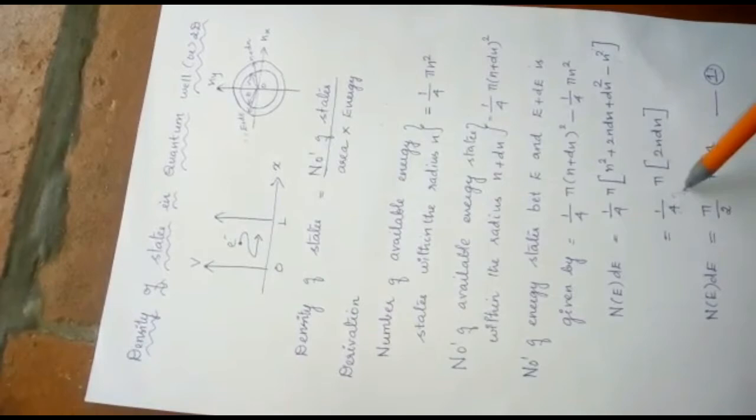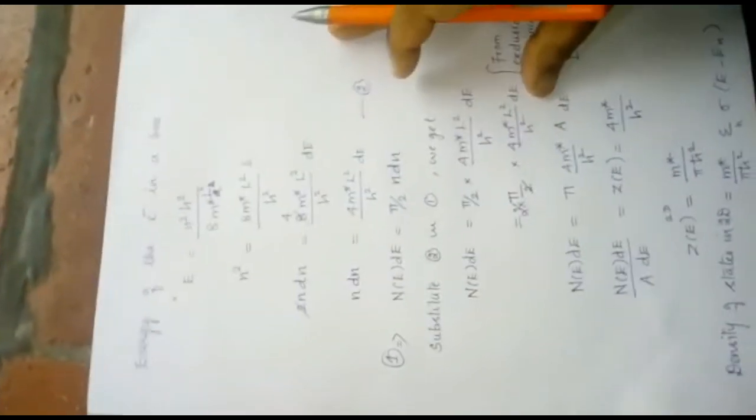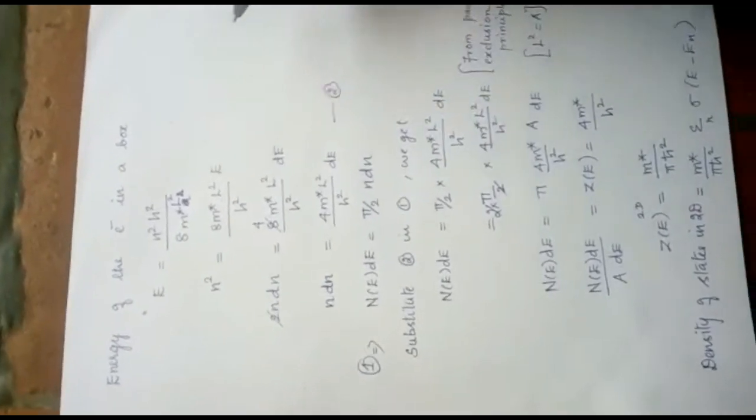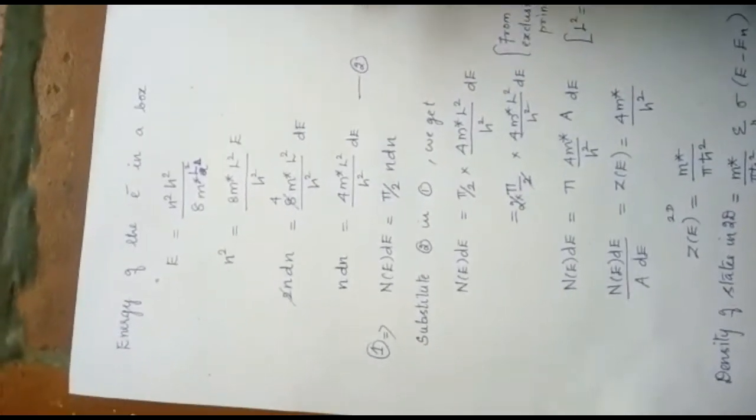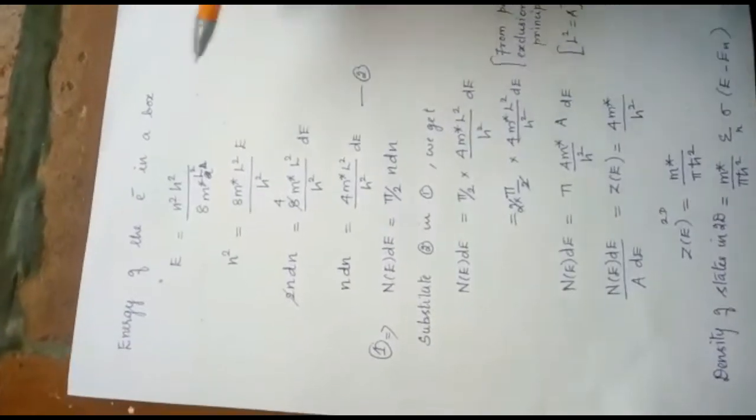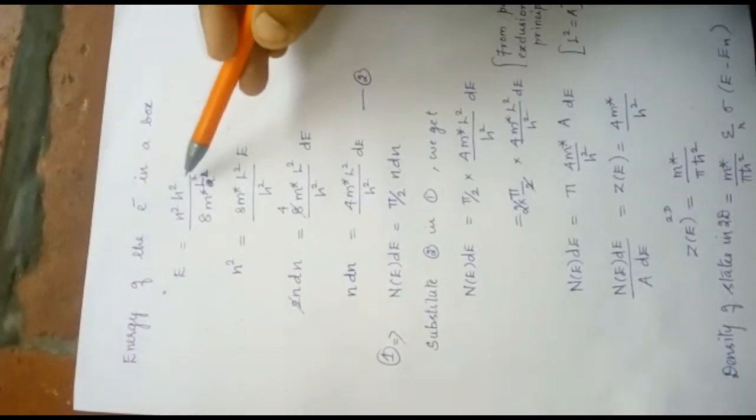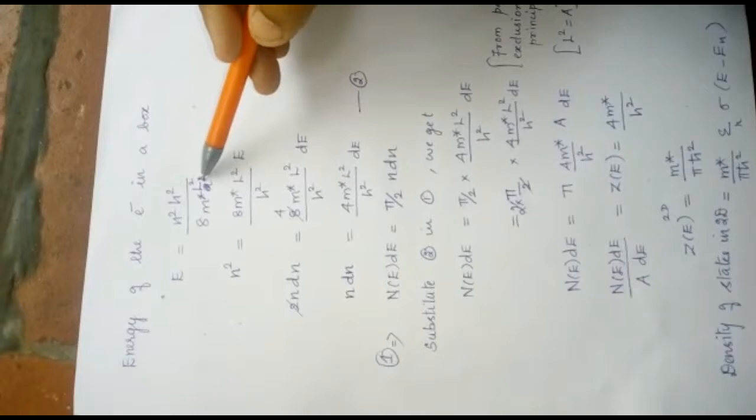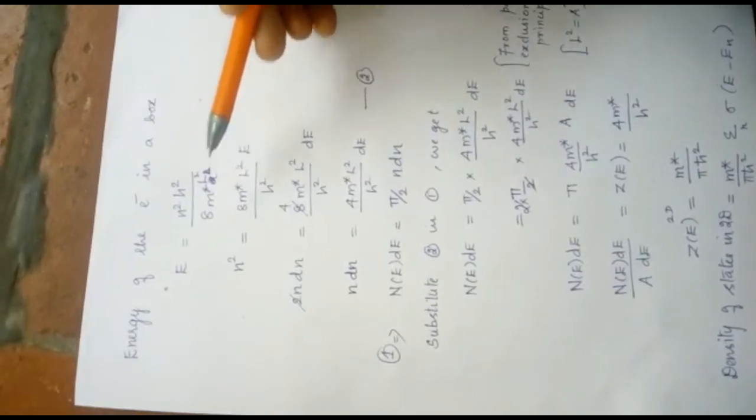This is getting cancelled, then we are getting 2 here. Then, we know the energy of a particle in a one dimensional potential box. We know E equal to n square h square by 8m L square. We can also put 8m a square also.